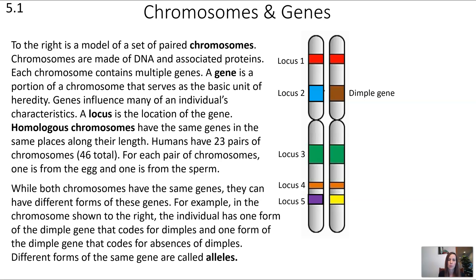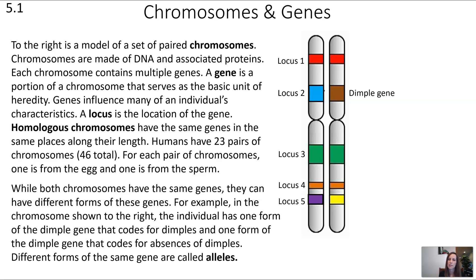Humans have 23 pairs of chromosomes for 46 total chromosomes. For each pair, one comes from the egg and one comes from the sperm. So humans are diploid, meaning we have two copies of each piece of information. While both homologous chromosomes have the same genes, they have different forms of those genes — called alleles. For example, the individual pictured has one form of the dimple gene that codes for dimples and one that codes for the absence of dimples, both found at locus 2 in the same location on both chromosomes. Different forms of the same gene are called alleles.